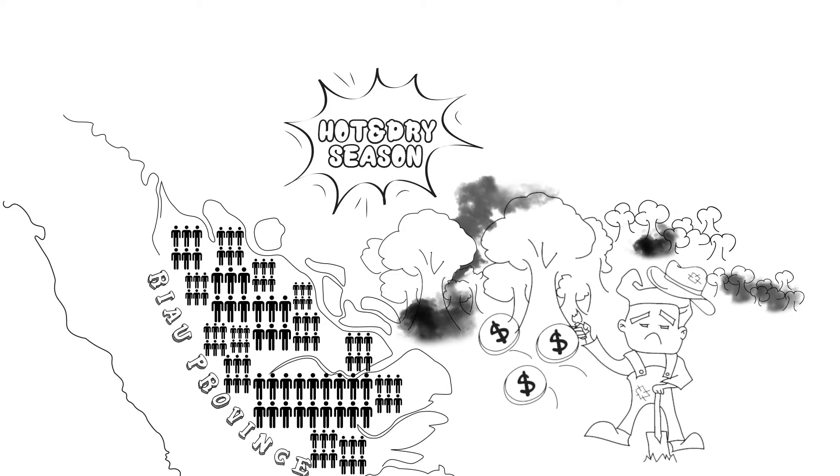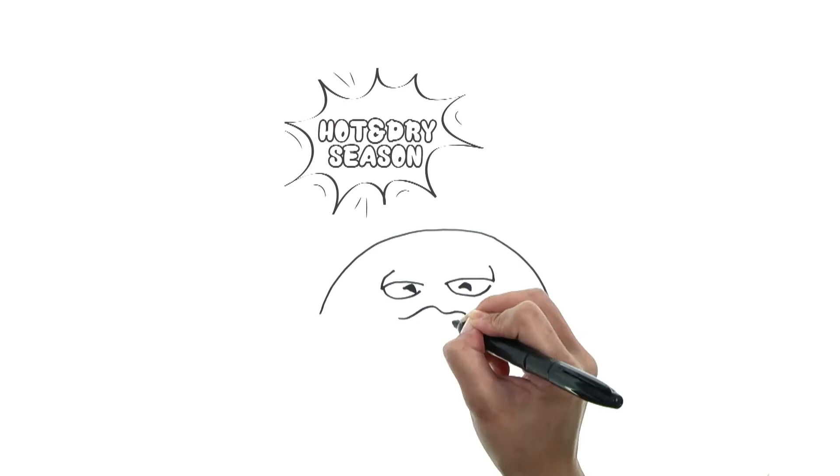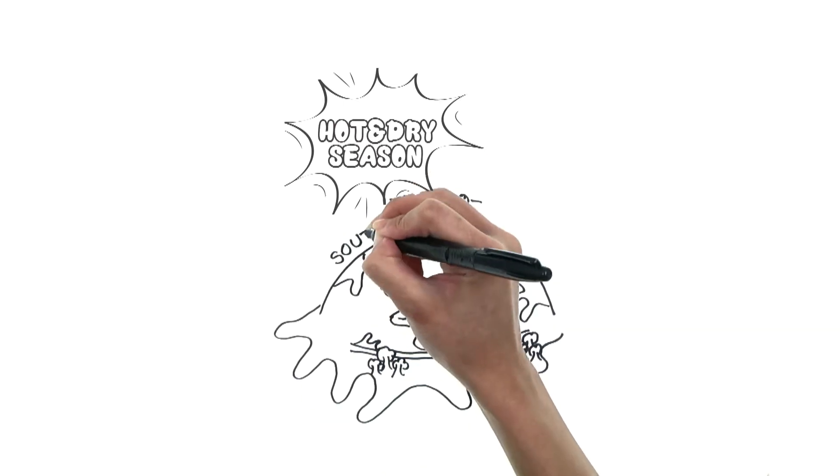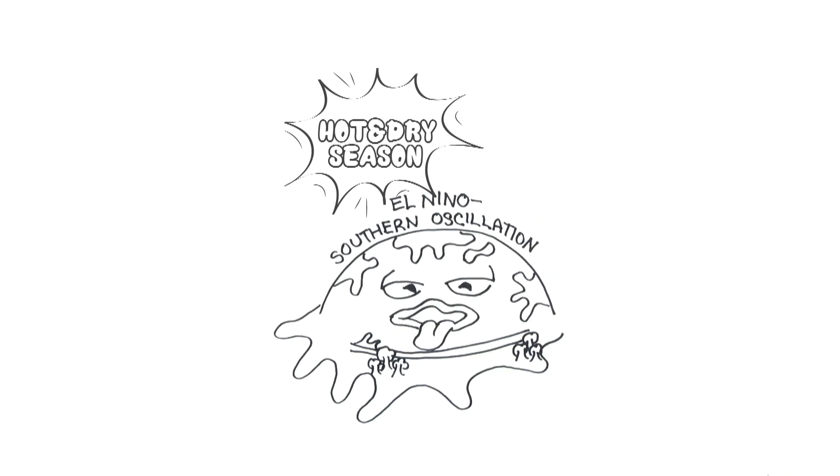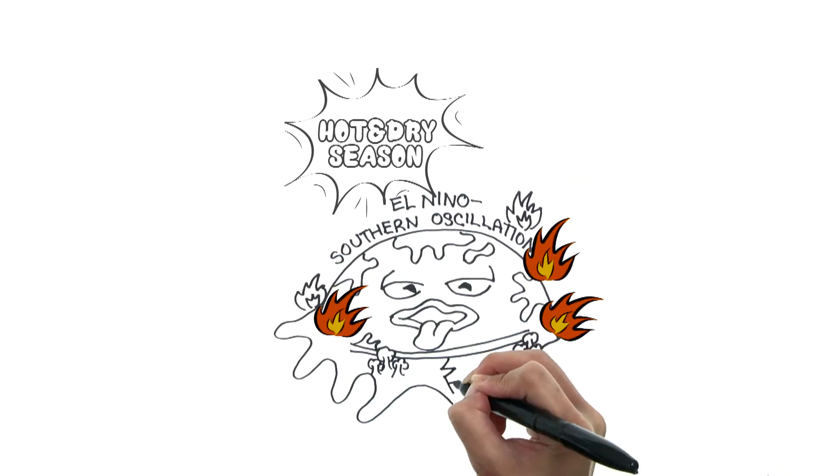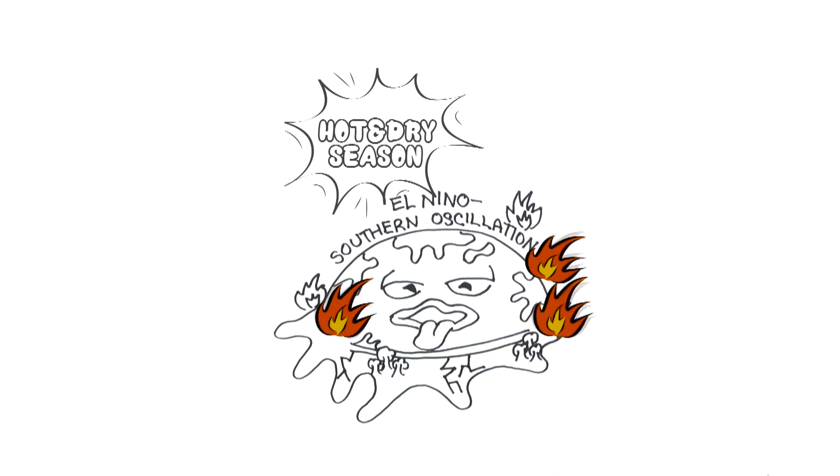The hot and dry season in the region also adds to this fiery issue. This season is brought about by a weather phenomenon called El Nino Southern Oscillation. The dry and hot weather causes fire to spark easily on dry vegetation in forested areas.